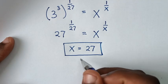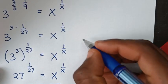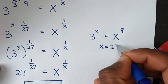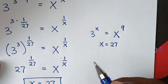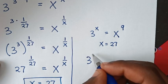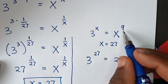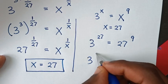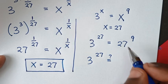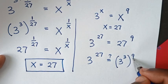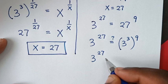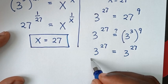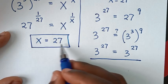Now let's check this answer. From our problem, 3^x = x^9. Substituting x = 27: the left side is 3^27, and the right side is 27^9. Since 27 = 3^3, the right side becomes (3^3)^9 = 3^(3 times 9) = 3^27. The left side and right side are equal, confirming x = 27 is correct.